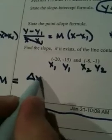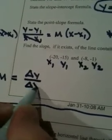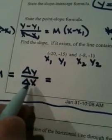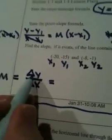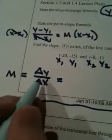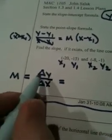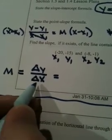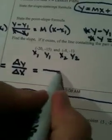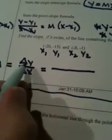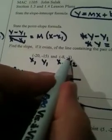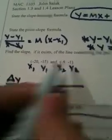And this may be new to some of you the way I'm writing this, change in y divided by the change in x. This is the same as in the past. Some of you have been taught rise over run. Some of you have been taught y sub 2 minus y sub 1 divided by x sub 2 minus x sub 1. This is saying the same thing. Change in y.